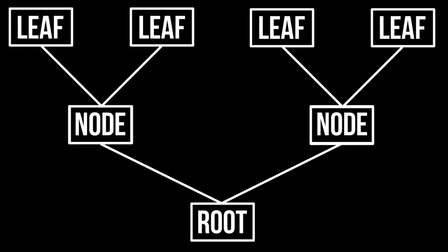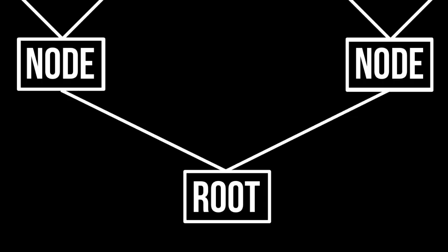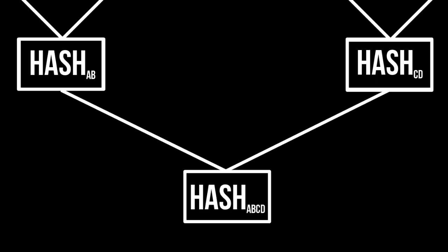One more look at the tree to keep it visualized. We can see the two nodes joined to form the root. You've probably heard of the Merkle root — this is how the Merkle root is formed. We have hash AB and hash CD, and we hash those two hashes together to form a new hash. That would be the Merkle root in this example, which we call hash ABCD.